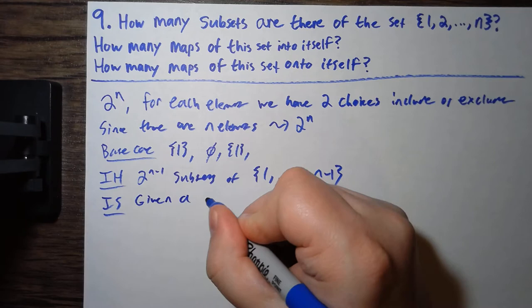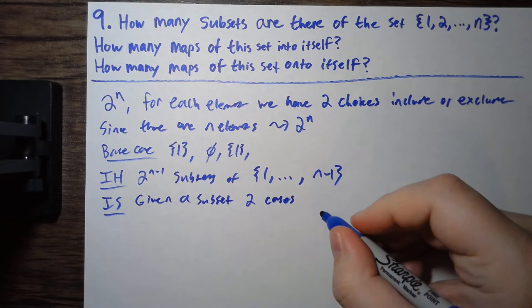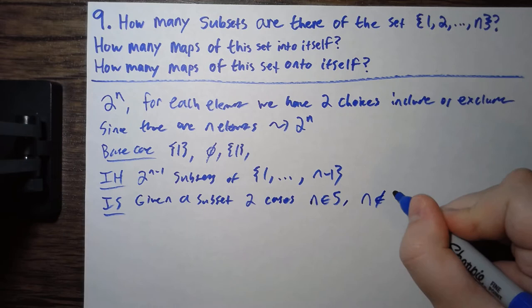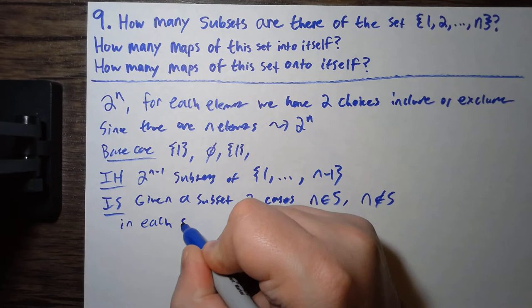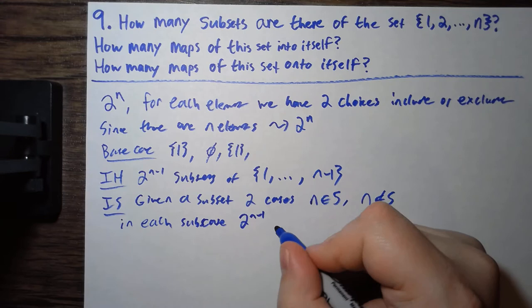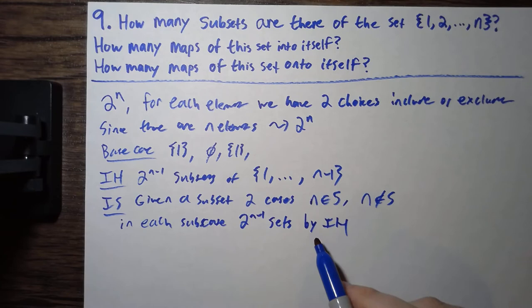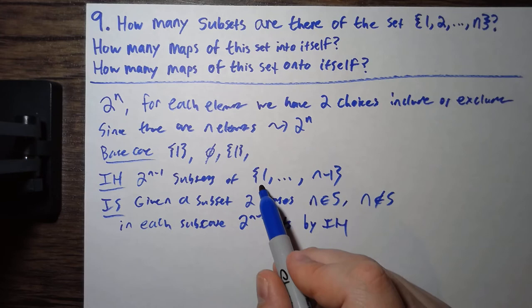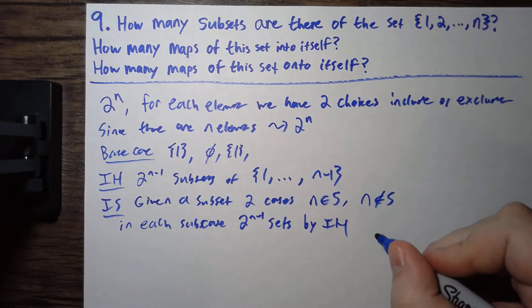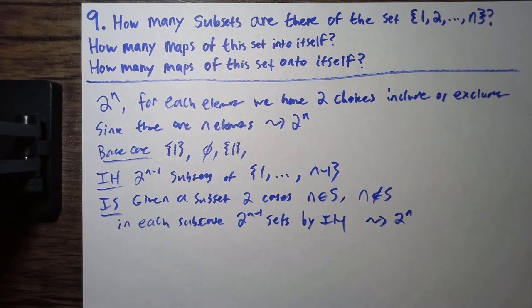if I have a given subset, there are two cases. Namely, n is an element of the subset, or n is not an element of the subset. And in each subcase, there are 2 to the n minus 1 sets by the induction hypothesis, just because you're either including n or excluding n, and then you're just looking at the previous n minus 1. By the induction hypothesis, there's 2 to the n minus 1 different ways of doing that. And so, this tells you that there have to be 2 to the n such subsets. So, that's kind of, maybe a little more formal way to do it.